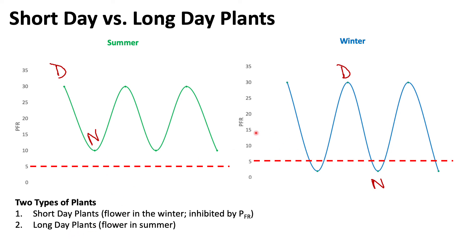In winter, long day plants experience low levels of Pfr because the long nights cause Pfr to be converted back into Pr, leaving insufficient Pfr to promote flowering. So long day plants will not produce flowers in winter. In summary, Pfr is crucial to the flowering stages of different plants: it inhibits short day plants, which flower in winter, but promotes growth and flowering in long day plants, which flower in summer.